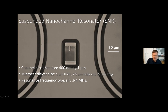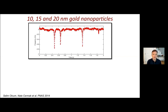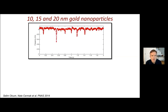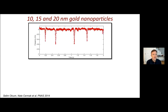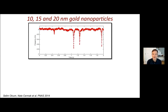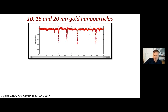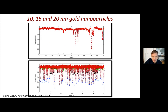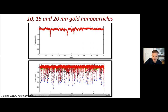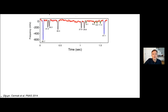Let me show some experiments from these devices, from Salim Okum and Nate Cermak, who developed this method about six years ago. They mixed together three different particle types — 10, 15, and 20 nanometer gold particles. A 10 nanometer gold particle weighs 10 attograms. Over a two-second interval you can see different peaks as particles flow through. On a longer, one-minute timescale you can identify the different populations. Zooming in, with the frequency response calibrated to mass, you can see the signal from each population and — since we know the density — make a histogram of the size distribution.